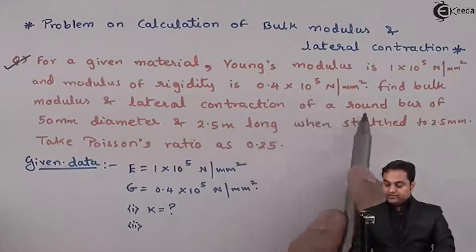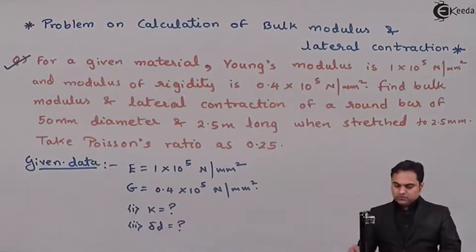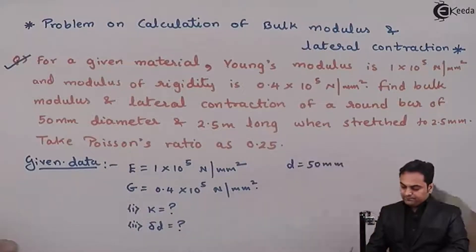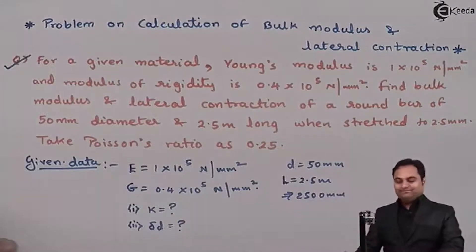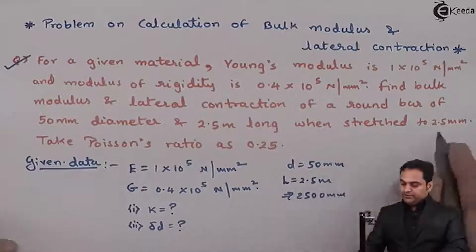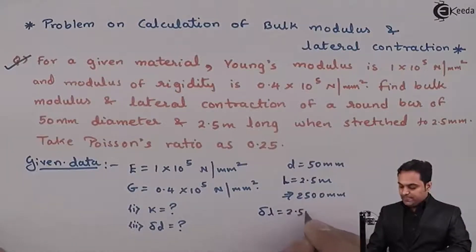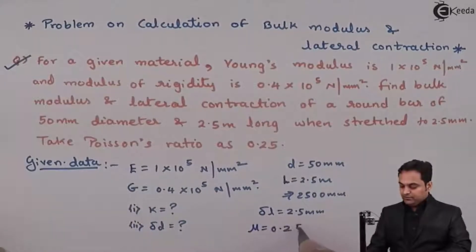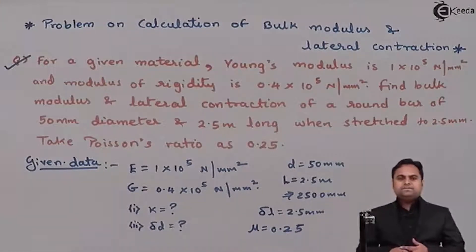Lateral contraction refers to the change in diameter of a round bar. The diameter D is 50 mm and the length of the rod is 2500 mm. When stretched, the increase in length is 2.5 mm. Poisson's ratio μ is given as 0.25.